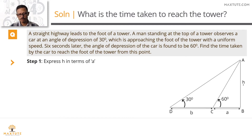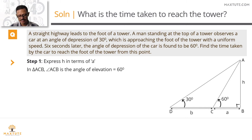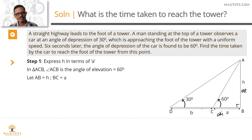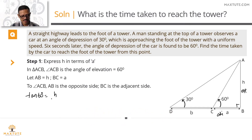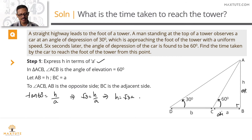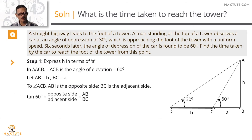Step 1: express H in terms of BC = A units. In right triangle ABC, angle ACB = 60 degrees. AB is the opposite side and BC is the adjacent side. Using tan: tan 60° = H/A. Since tan 60° = √3, we get H = A√3.